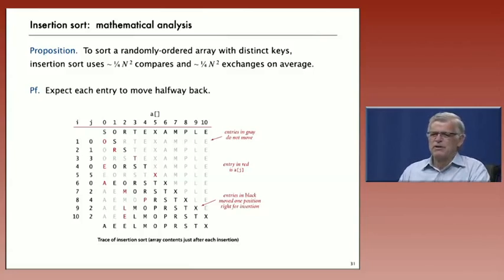And you can see that for a large array that's randomly ordered, the element that we put into place is going to go about halfway back on the average. So that means about half of the elements below the diagonal are going to be black on the average. There's N squared over 2 below the diagonal. Half of that is N squared over 4.